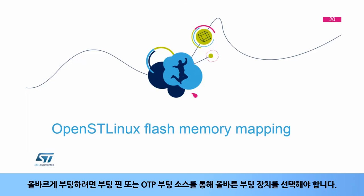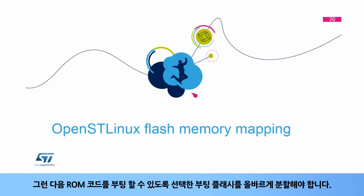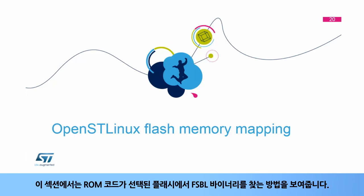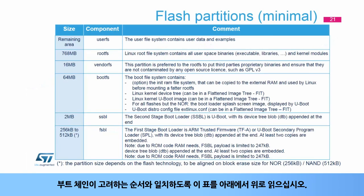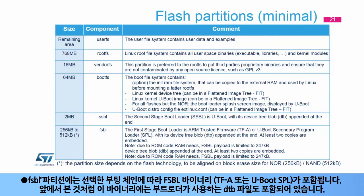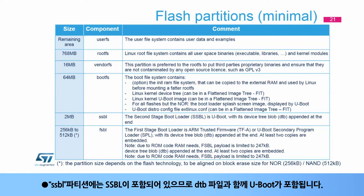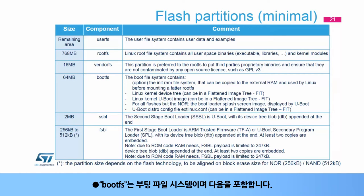To boot properly, the right boot device must be selected via the boot pins or the OTP boot source. The selected boot flash must then be properly partitioned to allow the ROM code to boot on it. This section shows how the ROM code looks for the FSBL binary in the selected flash, and describes the complete flash memory mapping implemented in the STMicroelectronics OpenST Linux distribution. Reading this table from bottom to top: the FSBL partition contains the FSBL binary — TFA or U-Boot SPL — which also includes the DTB file used by the bootloader. The SSBL partition contains U-Boot with its DTB file. Boot FS is the boot file system, containing the boot distro configuration file,